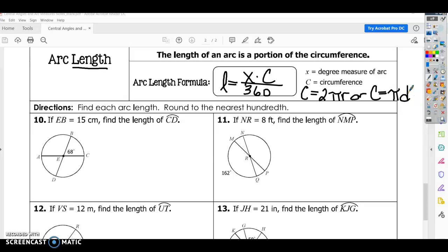So if you want to plug that in for C, you can do that, and it may make the formula a little more straightforward. So x, the degree measure of the arc, times 2 pi r, which is equal to circumference, divided by 360. So these are equivalent formulas.